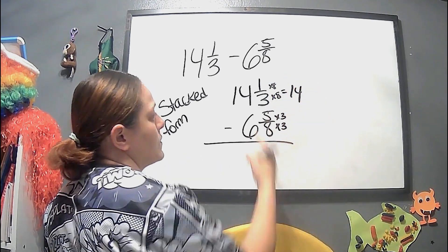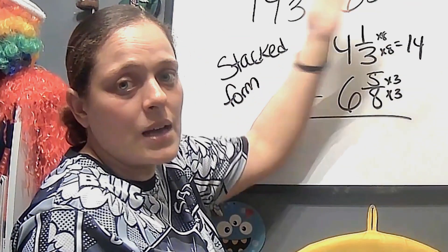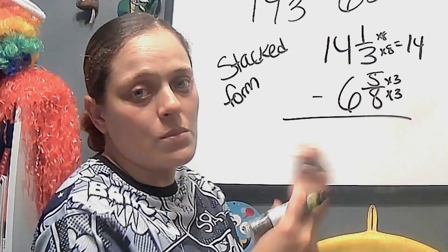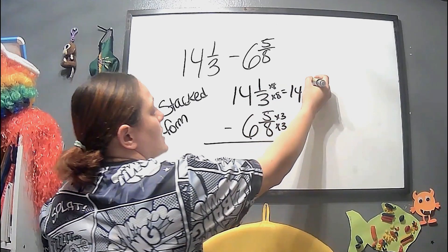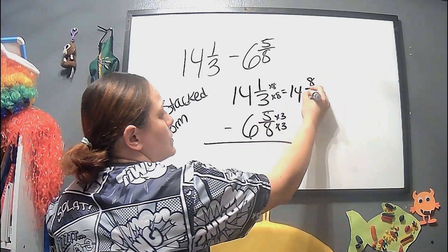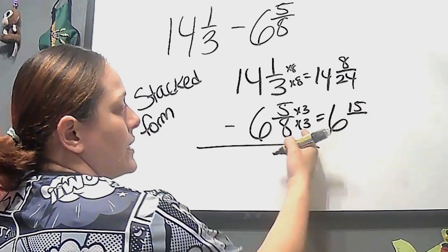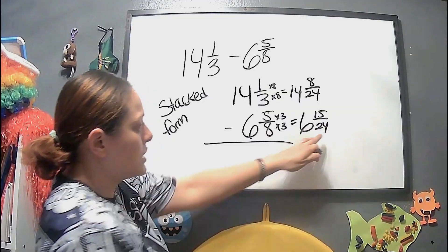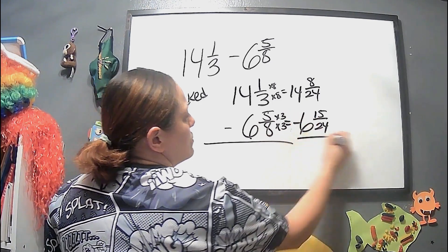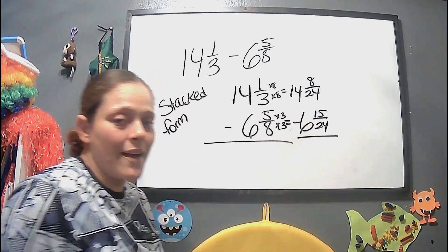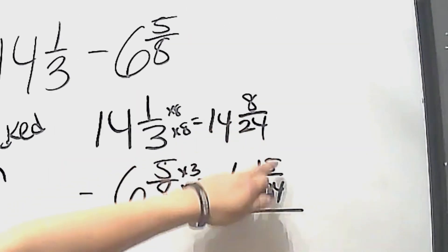This is the stack form and we have different denominators. What we usually do is multiply the numbers together to get a common denominator. So we multiply 8 by 3 and 3 by 8 — whatever you do to the bottom you do to the top. So we have 1 times 8 is 8 over 24, and 5 times 3 is 15 over 24. Now we have the same exact denominator.